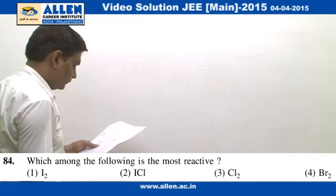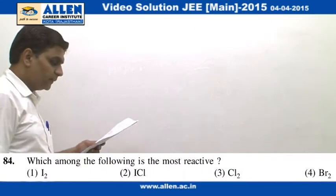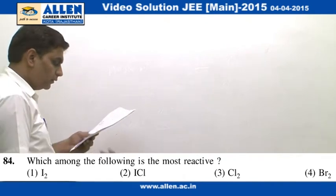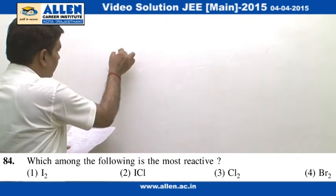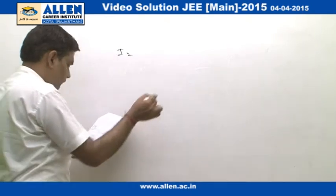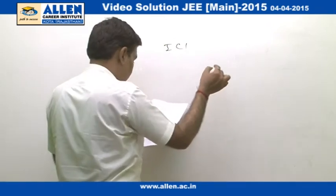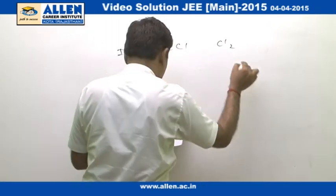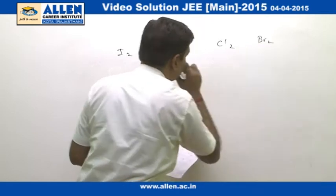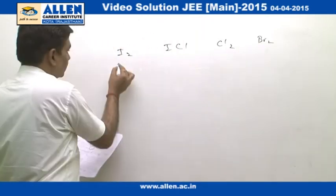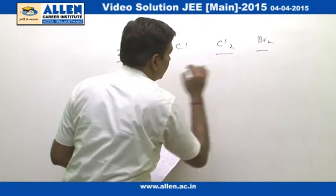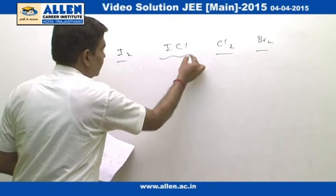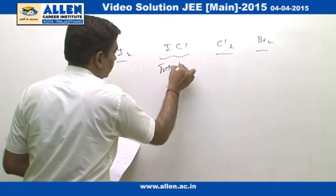Question number 84: which among the following is most reactive — I₂, ICl, Cl₂, and Br₂? I₂, Cl₂, and Br₂ are halogens, but ICl is an inter-halogen compound.